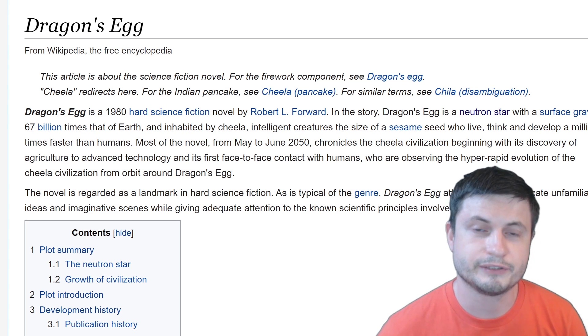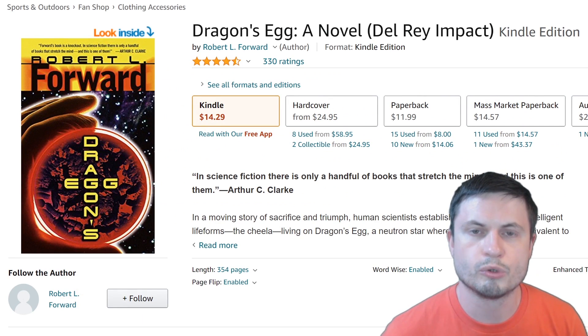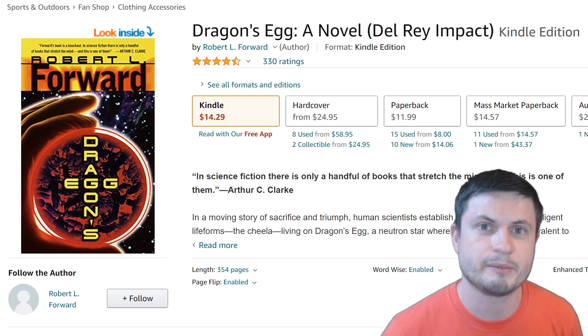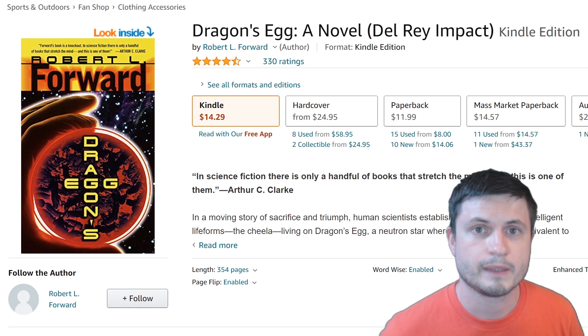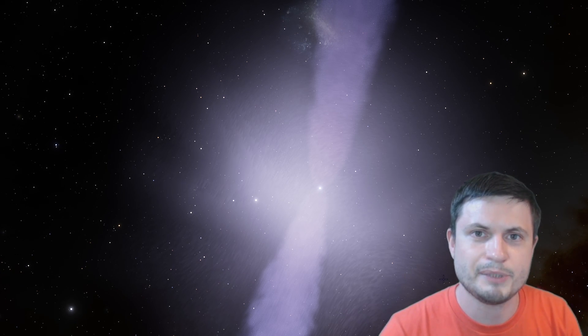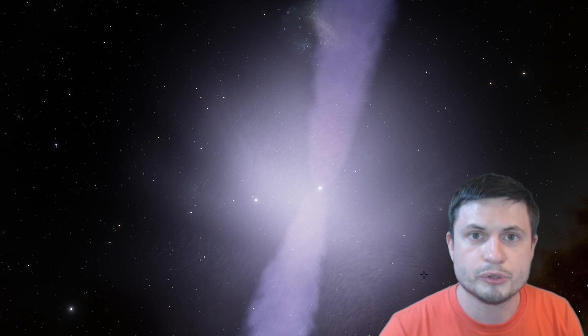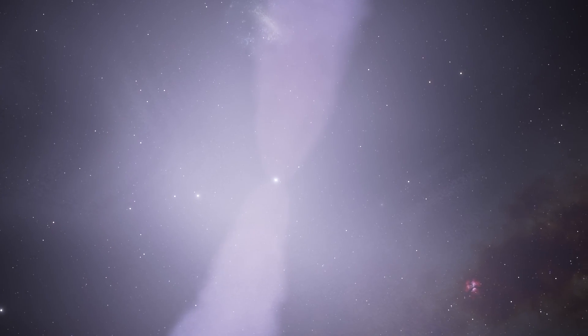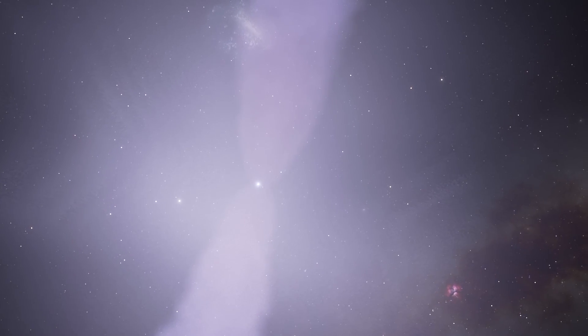But I think no book does this better than the famous Dragon's Egg, the book by Robert Forward that you can find in the description. And by the way, this is totally not sponsored. Neither am I associated with the author. I just personally think that this is a brilliant piece of science fiction. I don't really remember the details that well anymore because I've read it many years ago. But essentially, in that book, the humanity goes on an adventure and discovers itself around a somewhat unusual neutron star. And as they orbit around the neutron star,